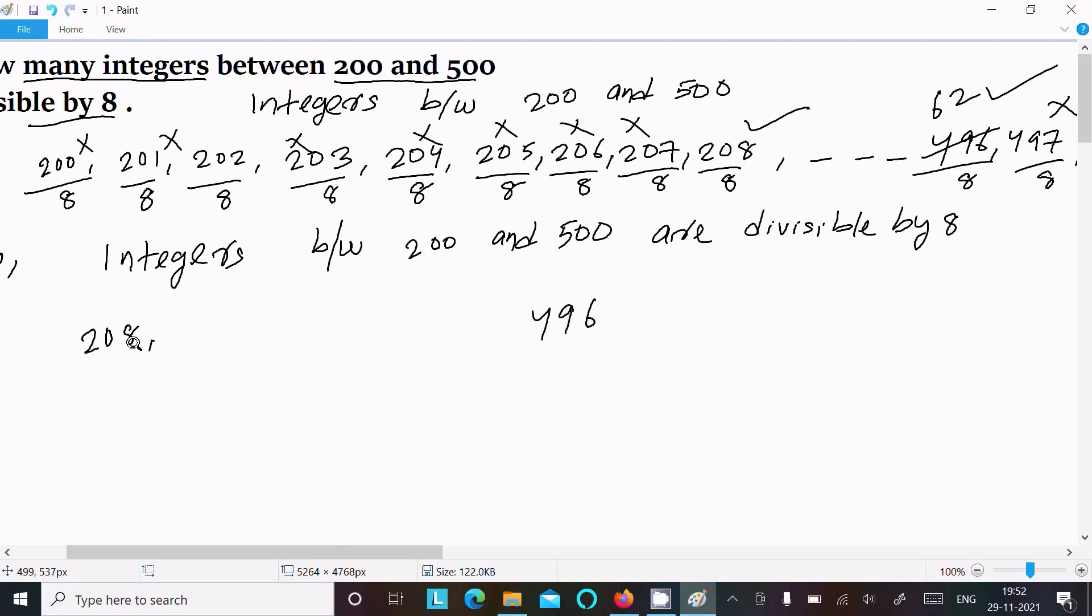Now the next number, you should add by 8. So 208 plus 8, that comes 216. So the next number is 216. 216 add with 8, then here the outcome is 224.